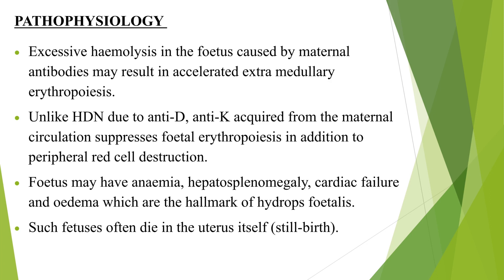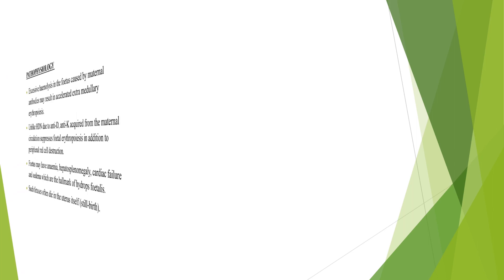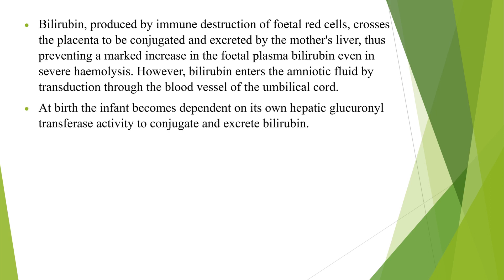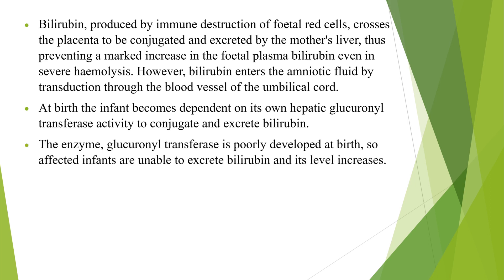Bilirubin produced by immune destruction of fetal red cells crosses the placenta to be conjugated and excreted by the mother's liver, thus preventing a marked increase in the fetal plasma bilirubin even in severe hemolysis. However, bilirubin enters the amniotic fluid by transudation through the blood vessels of the umbilical cord. At birth, the infant becomes dependent on its own hepatic glucuronyl transferase activity to conjugate and excrete bilirubin. The enzyme glucuronyl transferase is poorly developed at birth, so affected infants are unable to excrete bilirubin and its level increases.